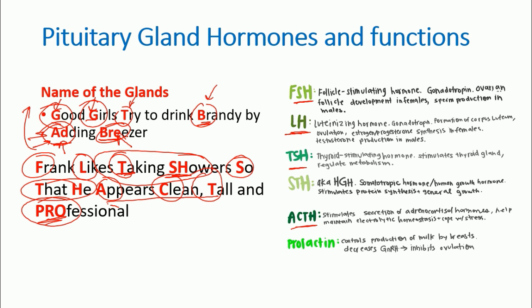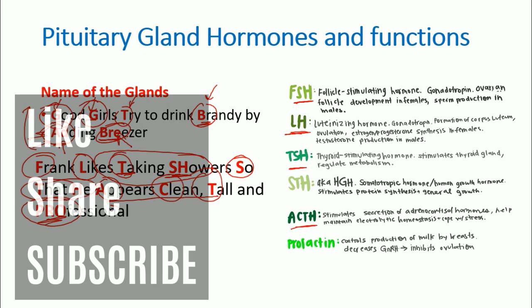So by remembering just these two sentences — 'Good girls try to drink brandy by adding breezer' and 'Frank likes taking showers so that he appears clean, tall, and professional' — you can write down all the hormones secreted by the pituitary gland, identify which glands they act on, and state their functions. If you like this video, please hit the like button, share it with your friends, and subscribe to the channel for more helpful videos. Thank you.